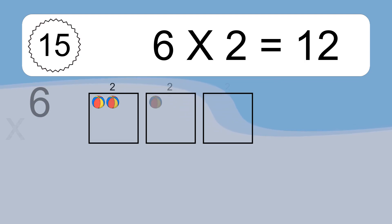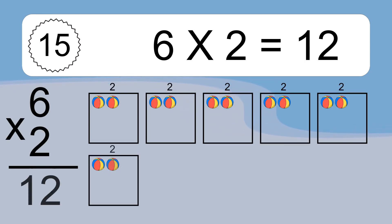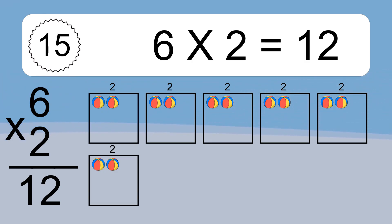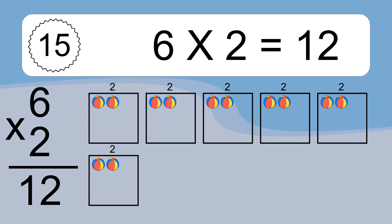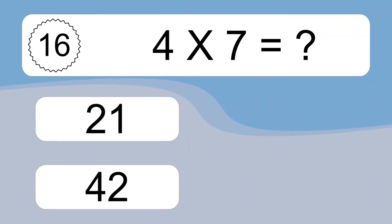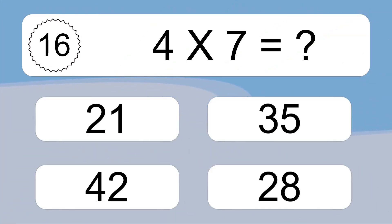6 times 2 equals what? 6 times 2 equals 12. We have 6 boxes and each box has 2 colorful balls inside. If you count all the balls in all the boxes together, you will have 6 times 2 balls. This equals 12 balls.